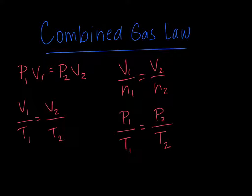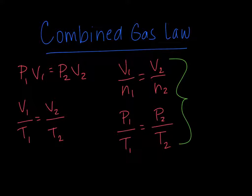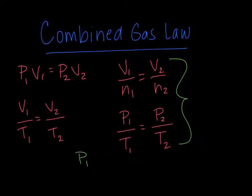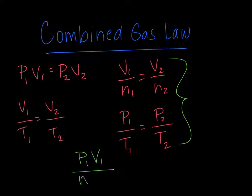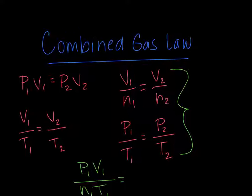The combined gas law is when we take all four of these laws and combine them together into one. If I look at them and wanted to make a law out of this, pressure is always in the numerator, so I've got P1, and volume is also in the numerator, so V1 over N1, because N is always in the bottom, and so is temperature, T1. We end up with this.